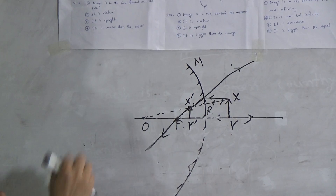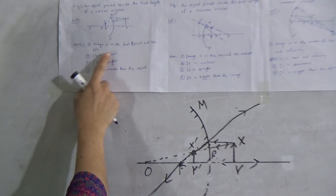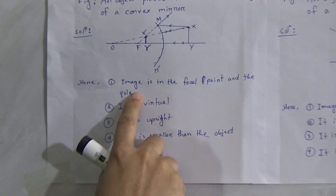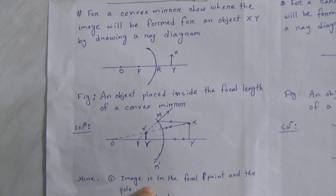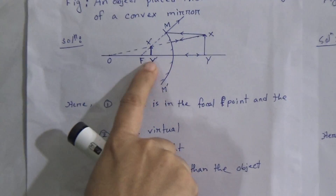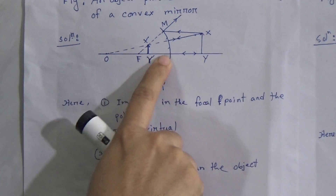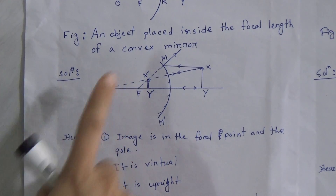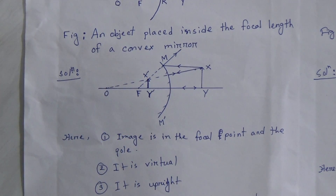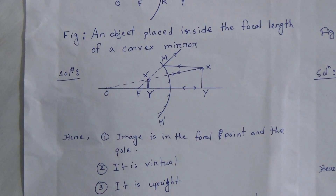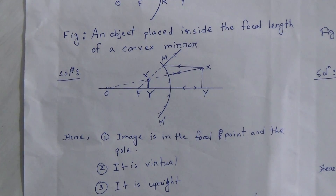The image is formed between the focal point and the pole. The position of the image is between the focal point and the pole. It is virtual, upright, and smaller than the object.